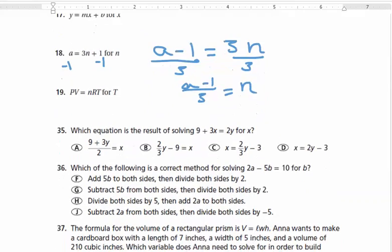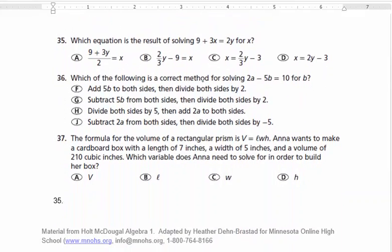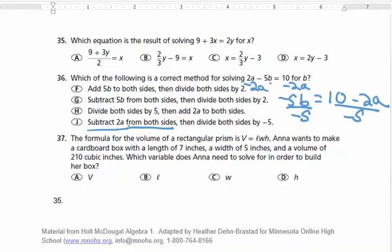And then let's just do one of these multiple choice ones. Let's do number 36. It says, which of the following is the correct method for solving 2A minus 5B equals 10 for B? Okay, if I want to solve for B, I need to get rid of what's being added or subtracted to it. So I would first subtract 2A from both sides. Does that have... That's what this says. Okay, and then I would have negative 5B. You don't actually have to do the steps, but let's just see what I would do next. Then I would divide everything by negative 5. So J says, subtract 2A from both sides. Yep, did that. Then divide both sides by negative 5. Yep, did that. So that's definitely the right answer for that one.